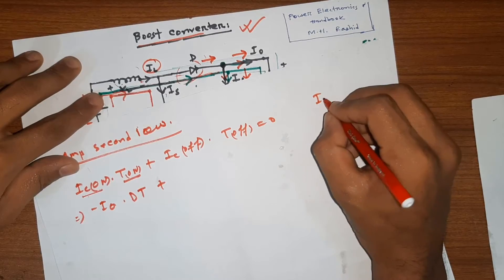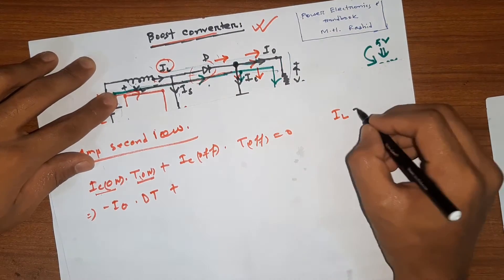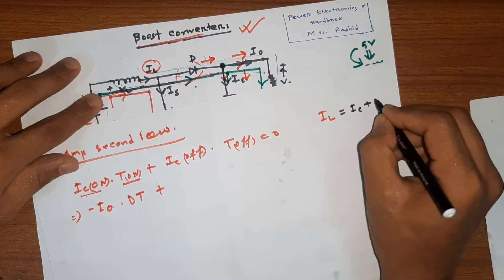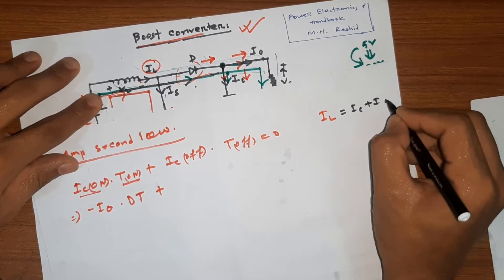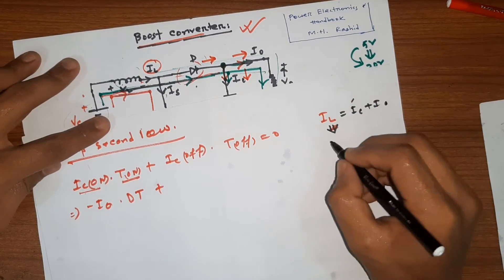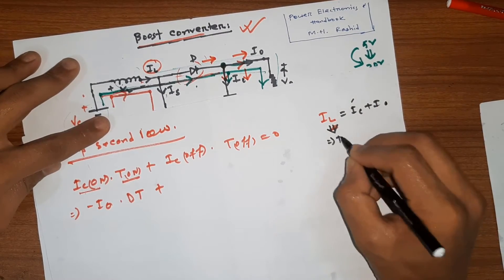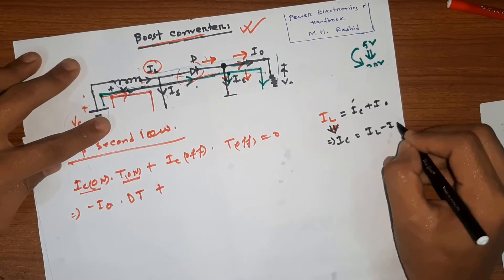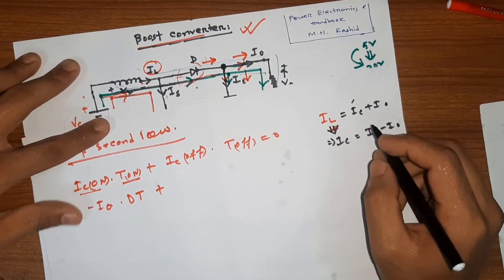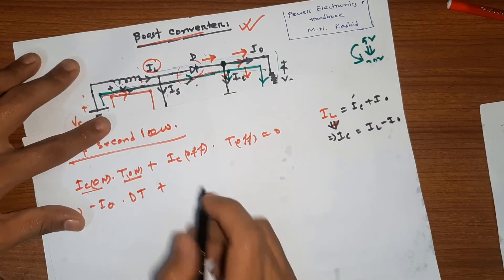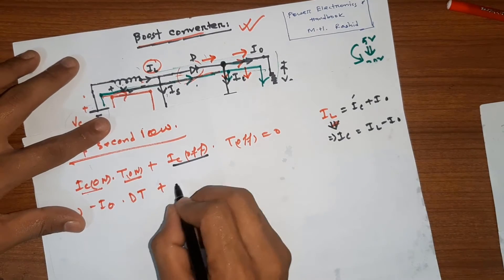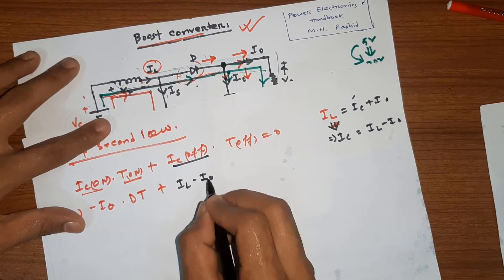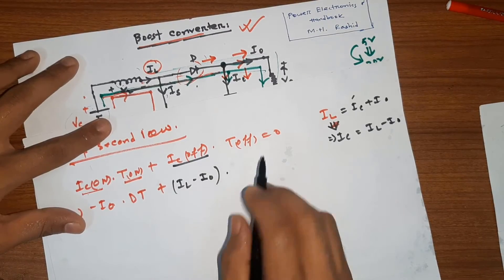The inductor current IL is the incoming current and is equal to IC plus I0. Therefore, IC equals IL minus I0.